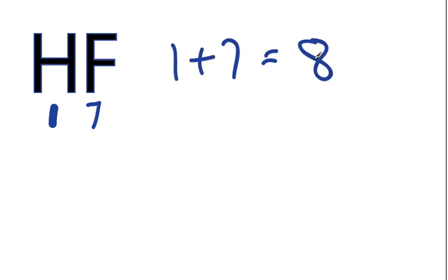1 plus 7 equals 8, so we have a total of 8 valence electrons to work with.